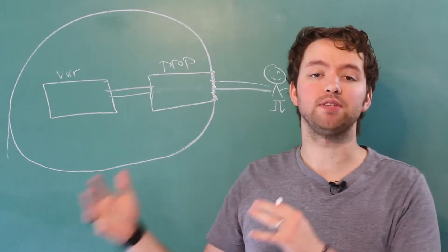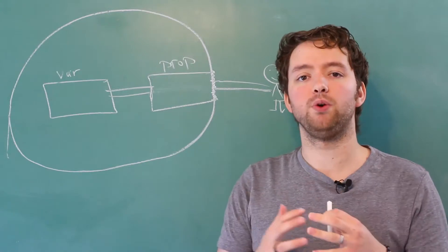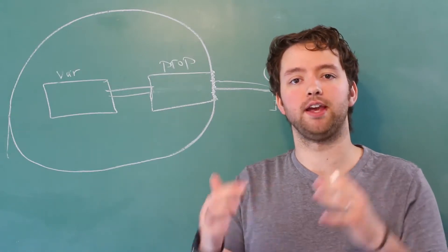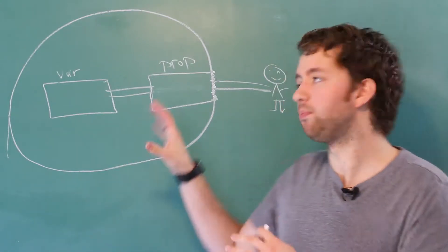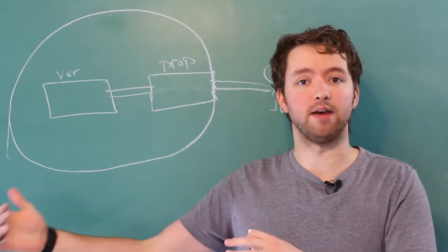And the only way we can access it is through this door, which is the property. Now, other programming languages, and sometimes even inside of C Sharp, you're going to see what are known as getters and setters. Properties have these, the get and set part of it.